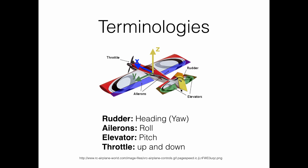First, we have the rudder, that is the yellow surface in the back wing, which is used to steer the vehicle into a certain direction. So the rudder is used to control the heading, which is also called the yaw.